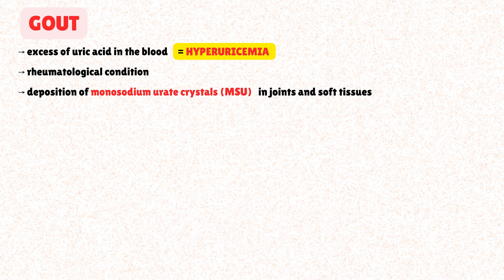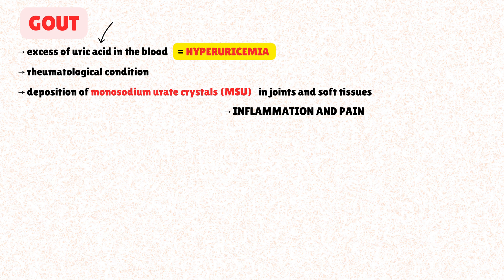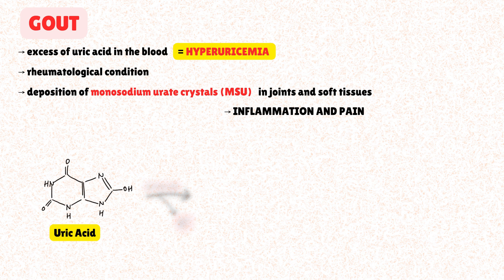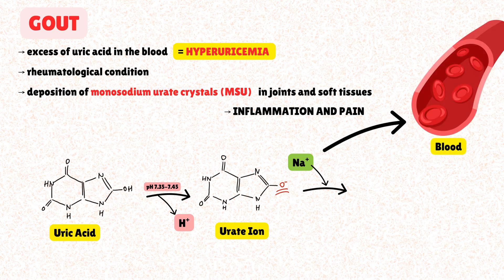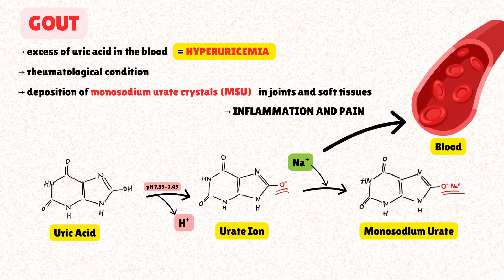These needle-shaped crystals are the direct cause of the inflammation and pain associated with gout. To understand them fully, let's see how they form first. Monosodium urate is the sodium salt of uric acid. At the body's normal physiological pH, around 7.4, uric acid — which is a weak acid — is mostly in its deprotonated ionized form known as urate. This urate anion readily combines with sodium ions present in the blood and other body fluids to form monosodium urate.